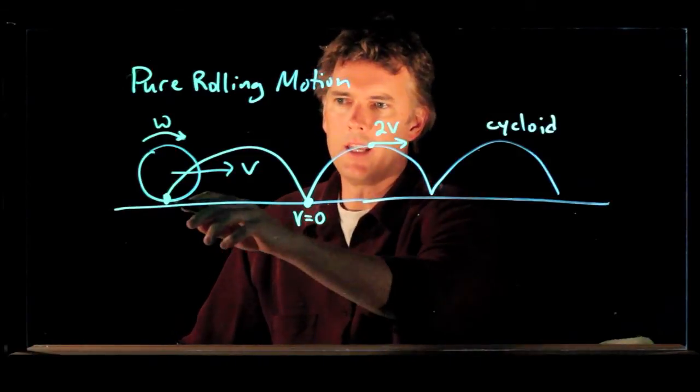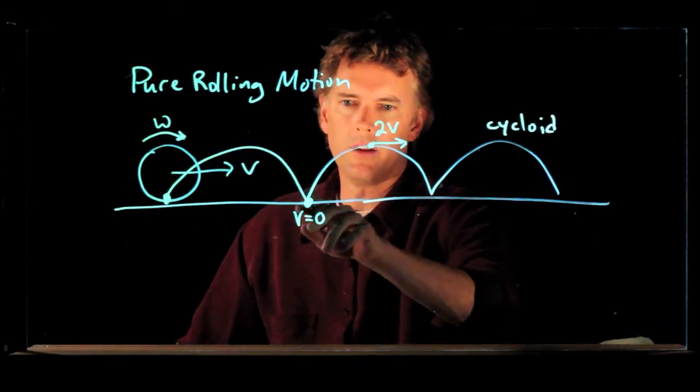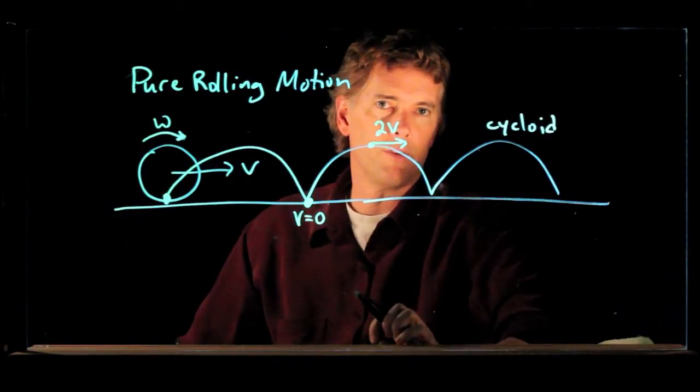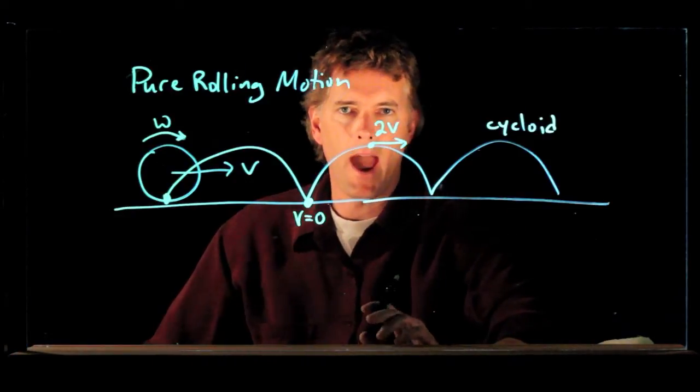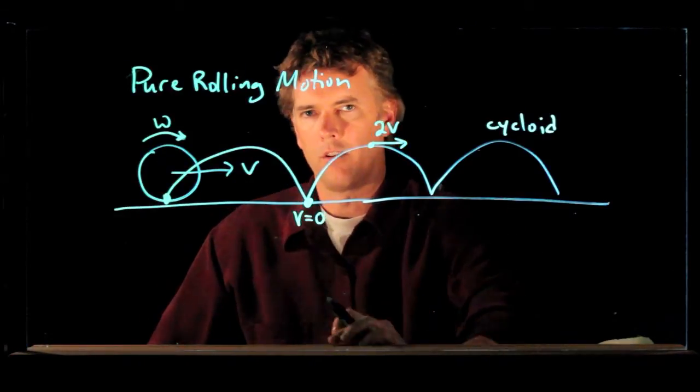And so this LED goes from zero to 2v to zero to 2v to zero to 2v over and over again. And the average of that is, of course, v.